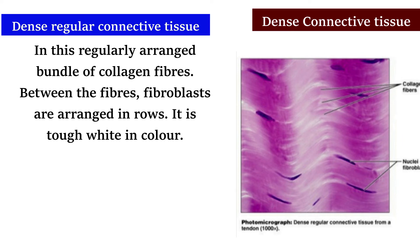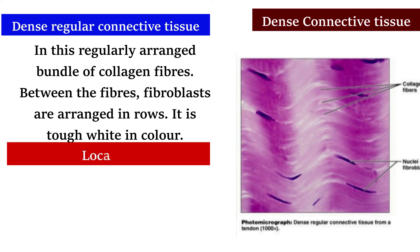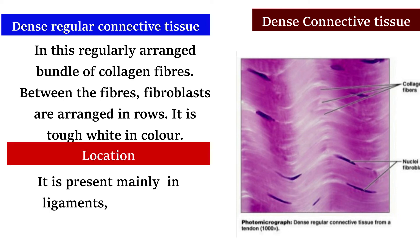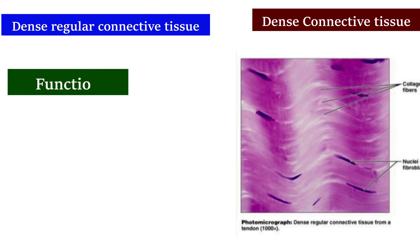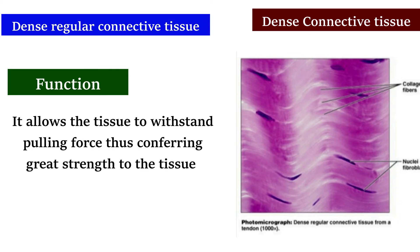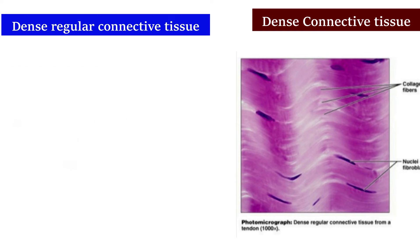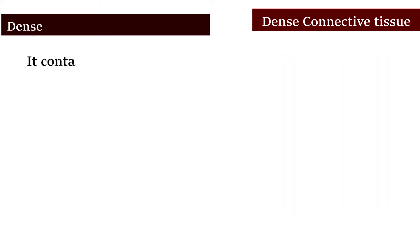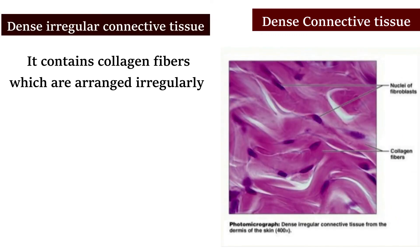Dense regular connective tissue contains regularly arranged bundles of collagen fibers, between which fibroblasts are arranged in rows. It is tough and white in color. It is present mainly in ligaments, tendons, and aponeuroses. Its function is to allow the tissue to withstand pulling forces, conferring great strength.